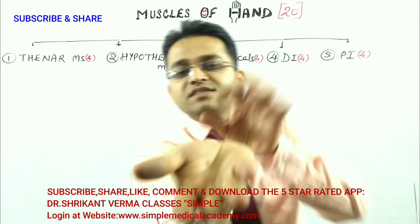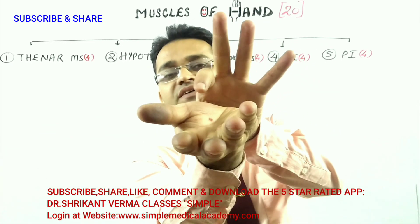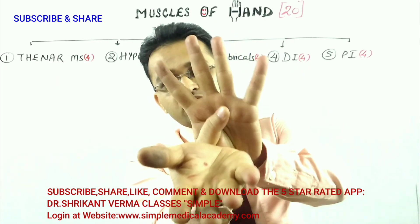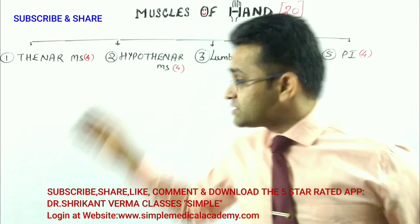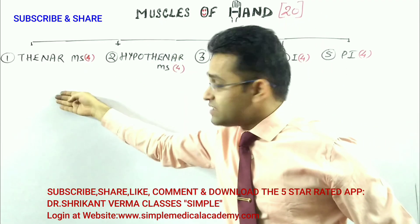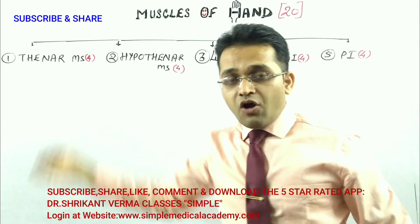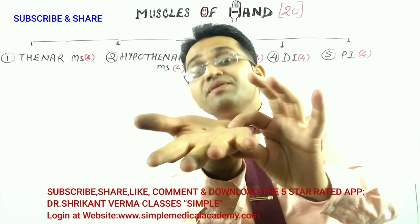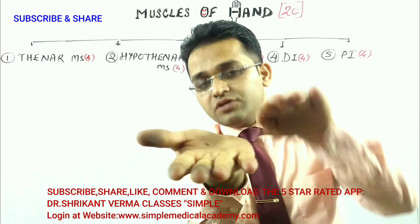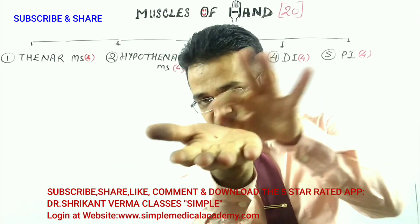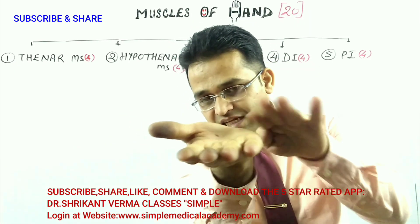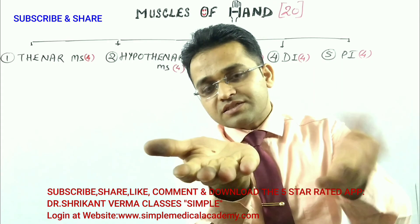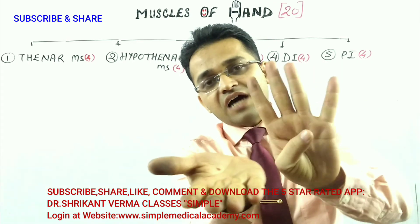What can you see in your hand? There is an elevation near the thumb — this is known as the thenar eminence. There are a total of 4 muscles within the thenar eminence. There is another elevation near the little finger — this is known as the hypothenar eminence. This group also contains 4 muscles.